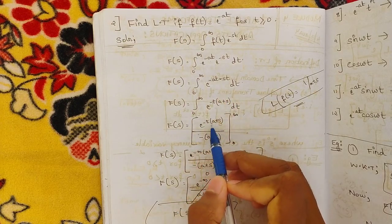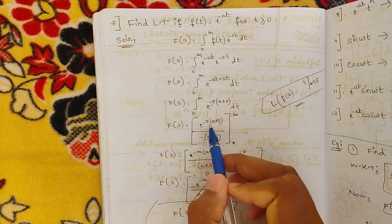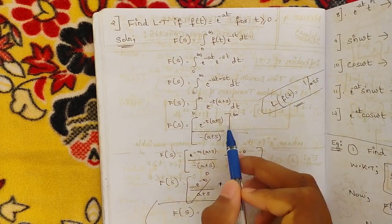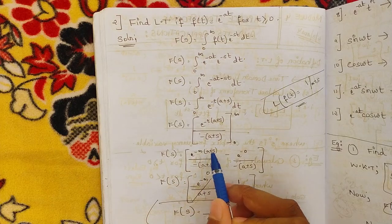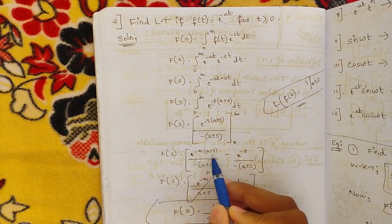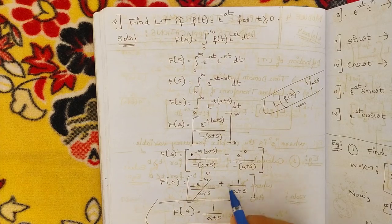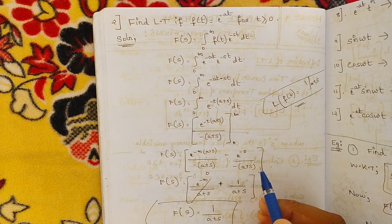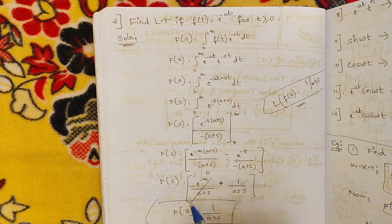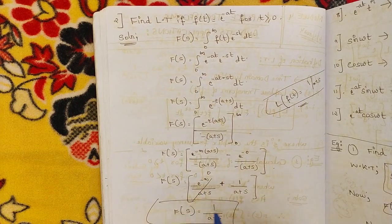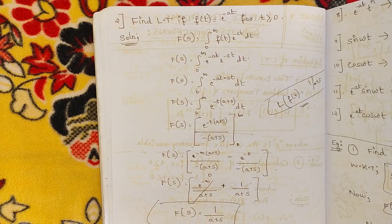Applying the integration: e^(−t(a+s)) divided by −(a+s), with limits from 0 to infinity. Substituting: e^(−∞·(a+s)) = e^(−∞) = 0, and at the lower limit e^0 = 1. So we get minus e^(−∞)/(a+s) plus 1/(a+s). The first term is 0, so our final answer is F(s) = 1/(s+a).